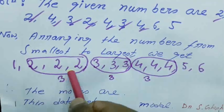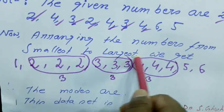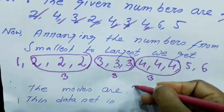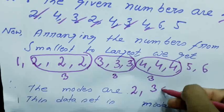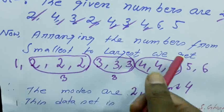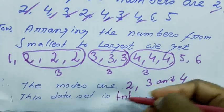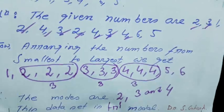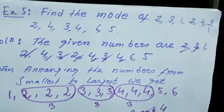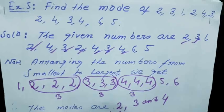We will not consider 1, 5, and 6. Two, three, and four are having the maximum frequency — greater than the others. So these three numbers we will consider. It means here we will get three modes. The modes are 2, 3, and 4. This data set is having three modes — that is how we can say it is tri-modal. Hope you understood the class.